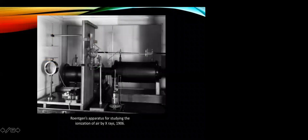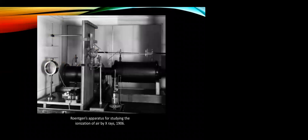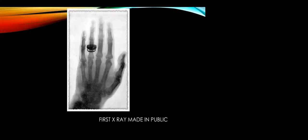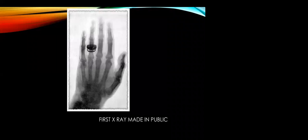This figure shows Röntgen's apparatus for studying the ionization by X-rays in 1906. And this was the famous image — the first X-ray made public — the X-ray of Röntgen's wife's hand with a ring on the ring finger.